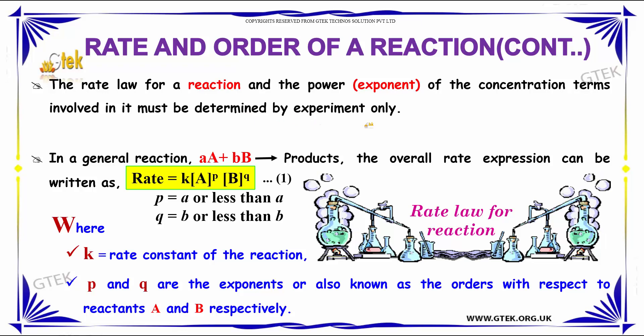You got the reaction A plus B gives the product. The overall rate expression can be determined or expressed as rate equal to k into A power p into B power q, where p is equal to a or less than a and q is equal to b or less than b.